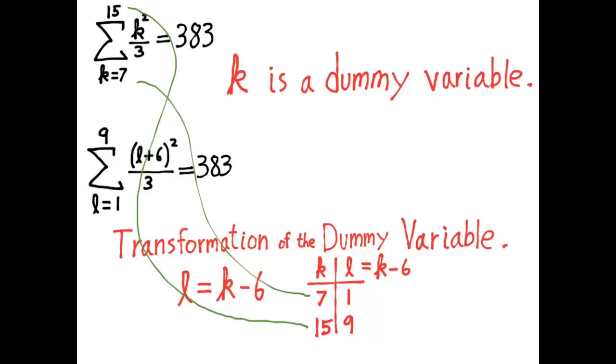And now we have written a sum that was originally in terms of k into a sum that's in terms of l, and it makes no difference to the answer. The answer is 383. It has nothing to do with k or l because k and l are dummy variables.